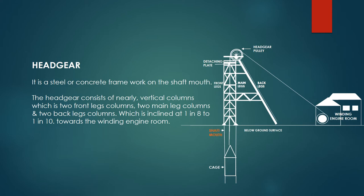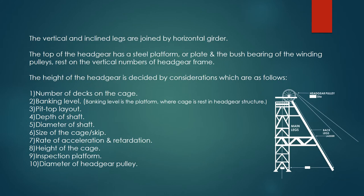The headgear consists of nearly vertical columns, which are two front leg columns, two main leg columns, and two back leg columns, which are inclined at 1 in 8 to 1 in 10 towards the winding engine room. The vertical and inclined legs are joined by horizontal girder.